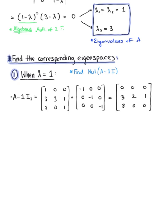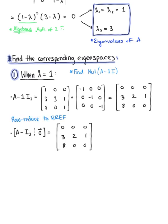We are now ready to find the null space of this matrix by row reducing A minus the identity augmented with the zero vector to row reduced echelon form. We start by interchanging the first row with a scalar multiple of 1/8 times the third row, giving us row 1: 1, 0, 0; row 2: 3, 2, 1; row 3: 0, 0, 0.